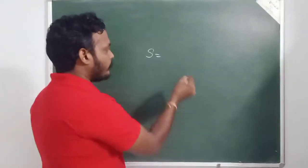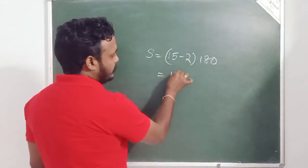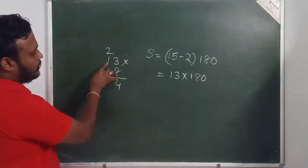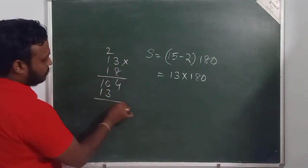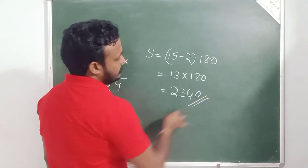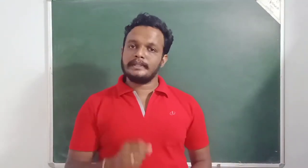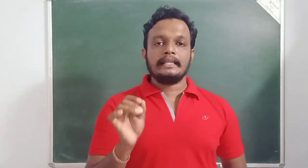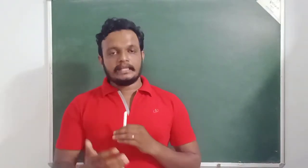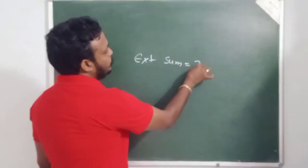Let's check with 15 sides. 15 minus 2 is 13, and we multiply by 180. Working through the calculation: the result gives us 60 degrees.